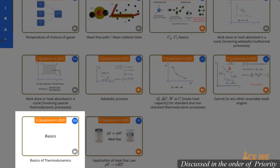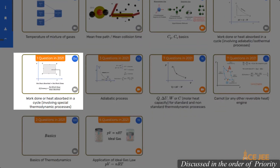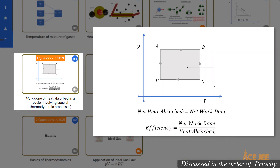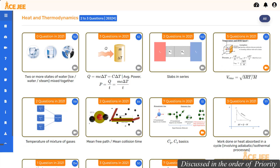In the next one, you will simply be tested on the basics of thermodynamics — go through the past year questions within this question type to get a good understanding. In the following one, you will be given water in different states and asked to determine the unknown when they are mixed together and reach an equilibrium temperature. Simply use conservation of energy: heat lost by the hotter matter equals heat gained by the cooler matter. In the last one, you will be asked to determine the work done or heat absorbed by a gas as it goes through a cycle involving special or non-standard thermodynamic processes. Best wishes for questions on heat and thermodynamics.